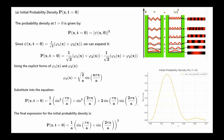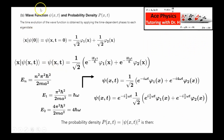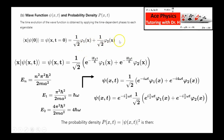Part B asks us to find the wave function and the probability density as a function of time. The rules governing how the wave function evolves in time come from the time-dependent Schrödinger equation. The rule is: you're initially given a state at t equals 0, and that state must be written in terms of eigenstates of the Hamiltonian. If it's not, you have to decompose it into eigenstates of the Hamiltonian. In this example, the state is already given in terms of eigenstates of the Hamiltonian — energy E1 and energy E2.